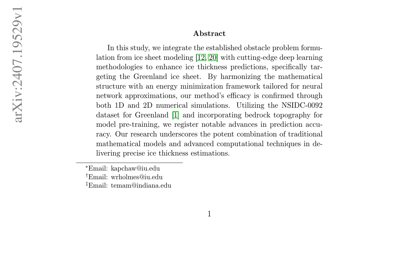The ice sheet model is mathematically formulated on a bounded and connected open subset of the two-dimensional Euclidean space, denoted as omega, with a Lipschitz continuous boundary. The bedrock elevation is represented by the function b, and the elevation of the top surface of the ice sheet is characterized by the function h, which always maintains a value greater than or equal to b. The thickness of the ice, denoted as h, is non-negative throughout the domain omega.